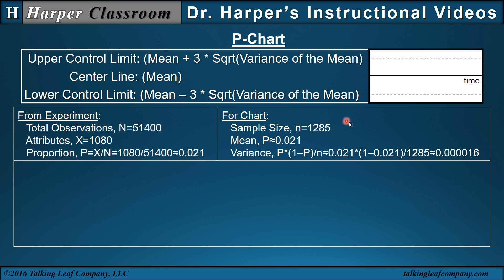For the chart, the sample size (small n) is 1,285, and that's given. The mean, which is P = 0.021, is the estimate of the proportion. The variance, which is P times (1 minus P) divided by n, is calculated here, and is approximately 0.000016.